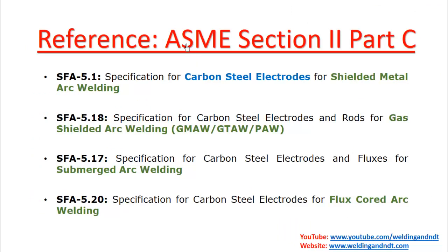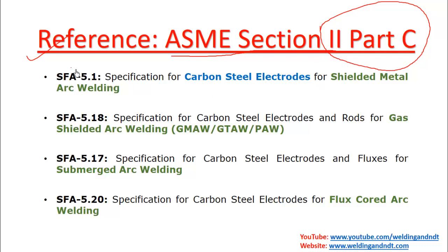First, the code reference: this is ASME Section 2 Part C, which is exclusive for welding electrodes and filler materials. For carbon steel electrodes used in shielded metal arc welding, the AWS classification is SFA 5.1. SFA 5.1 is the specification for carbon steel electrodes for shielded metal arc welding, and you can also find this material in ASME Section 2 Part C.